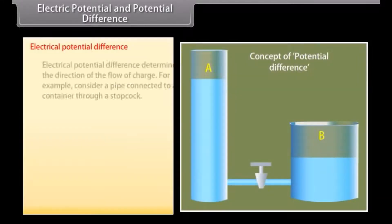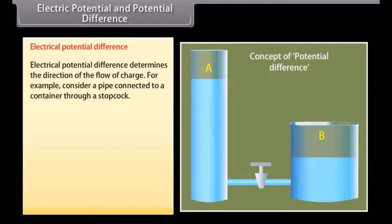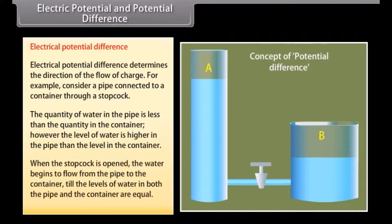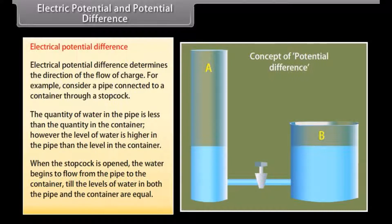Electrical potential difference determines the direction of the flow of charge. For example, consider a pipe connected to a container through a stop cork. The quantity of water in the pipe is less than the quantity in the container; however, the level of water is higher in the pipe. When the stop cork is opened, water flows from the pipe to the container until the levels are equal. It is the potential difference that is responsible for the direction of flow.